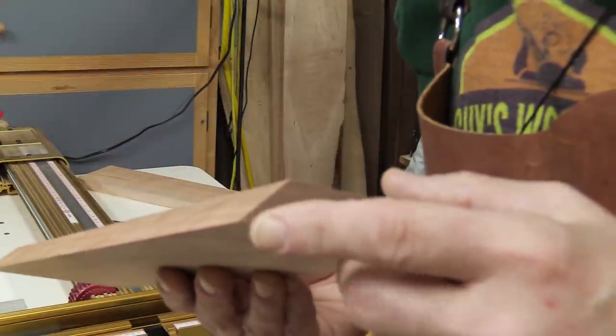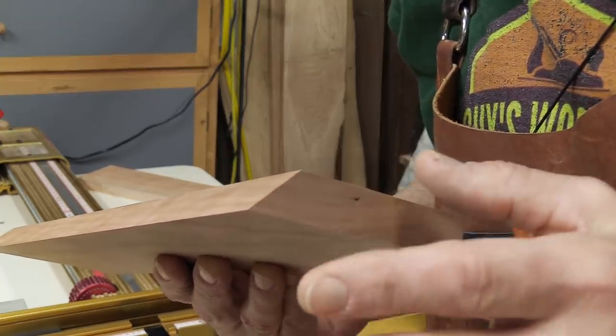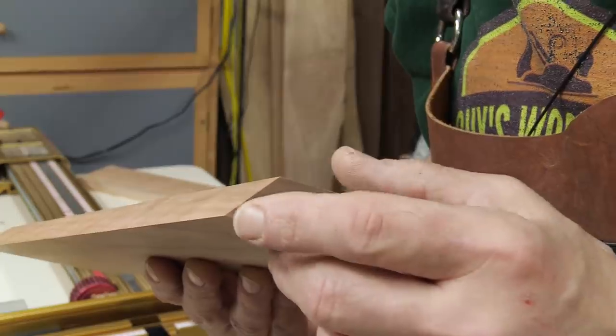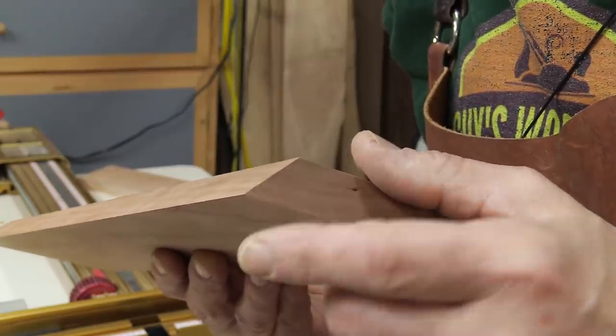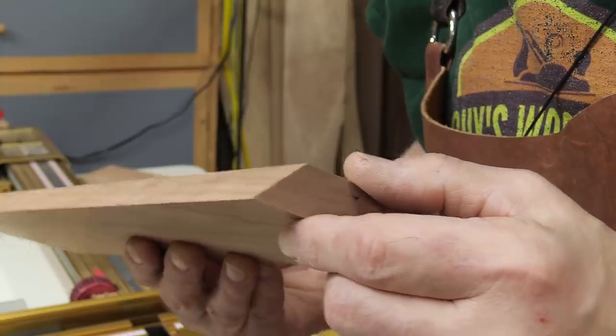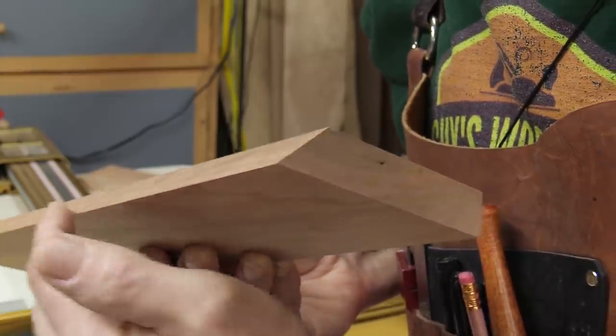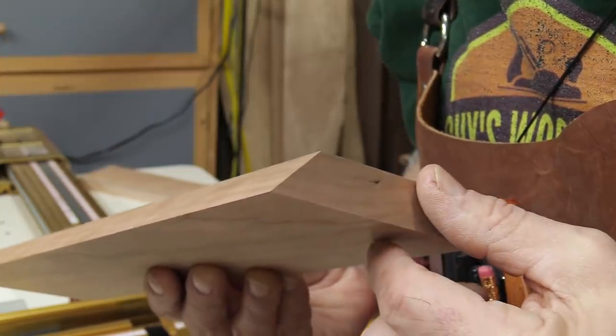Well after about four or five passes, that's what I'm looking for right there. I was raising up maybe a thousandth or a couple thousandths at a time and I finally got to that point. It's very important that you don't go past that edge because the piece could dip when you get to the other side of the fence. But I've got a nice sharp edge all the way along here. I'm just going to go ahead and run the other board.